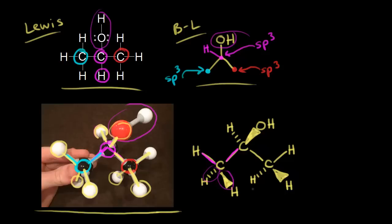Usually you don't see the hydrogens drawn in on one of these, so we could simplify our three-dimensional bond line structure. We could just show an OH coming out at us in space with a wedge, which implies there is a hydrogen going away from you in space.